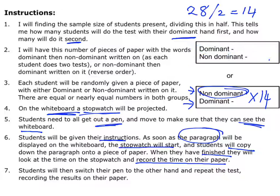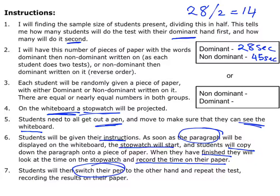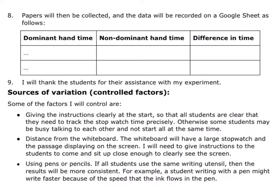So if they were doing their dominant hand first and got 28 seconds, they write that down; if their non-dominant hand took 45 seconds, that goes on the paper too. Once they've done the first test, students switch their pen to the other hand and repeat the whole test, recording their results. Then I collect all the papers and record the data on a Google Sheet — dominant hand times in one column, non-dominant hand times in another column, and the differences in a third column. Lastly, I say thank you to the students.